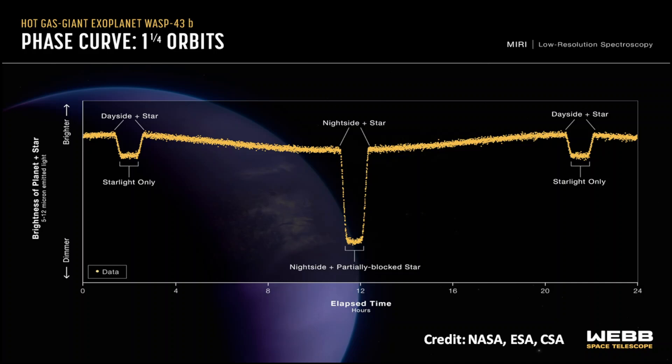The mid-infrared light curve taken with the James Webb Space Telescope shows two dimmings per orbital period. The dimming at the left is caused by the planet disappearing behind the star, and the big dimming in the center is from when the star is covered by the planet.